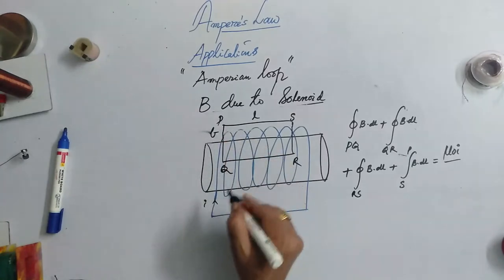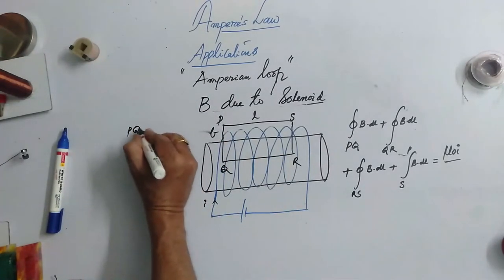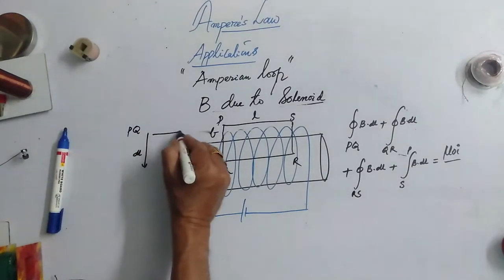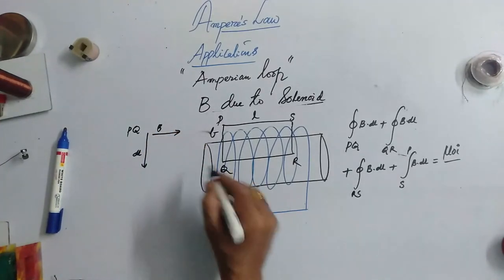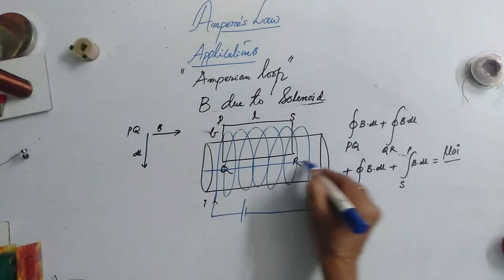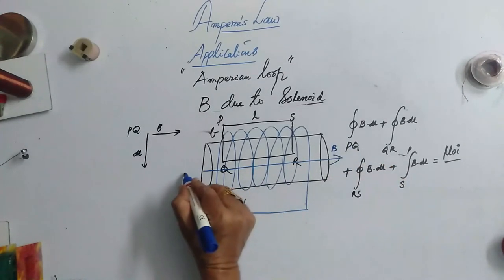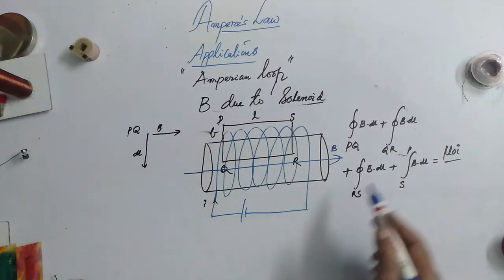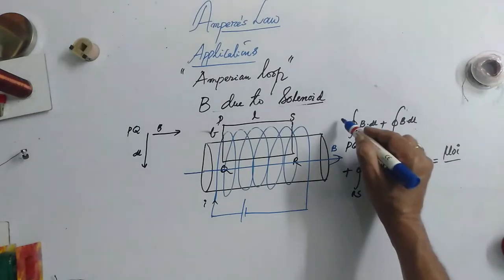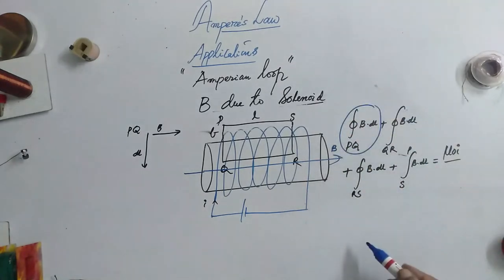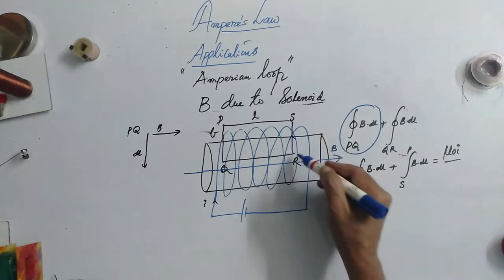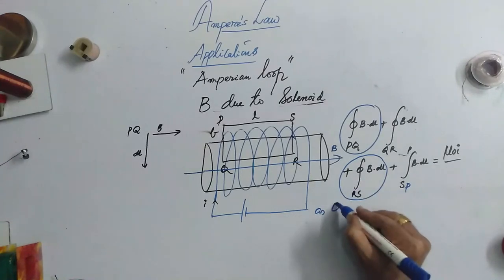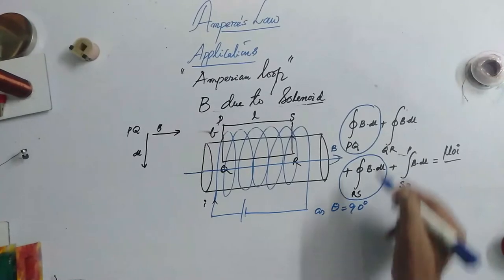If you observe the magnetic field here along PQ, the length element is like this. This is DL and then the magnetic field is in this direction. Now, the angle is 90. When the two vectors are perpendicular, their dot product must be equal to 0. So, in that case, here this becomes 0 and this SR or RS rather that is also 0 as theta is equal to 90. So, I can put zeros here.